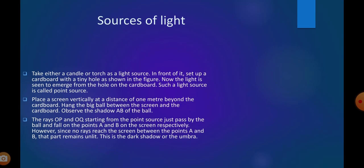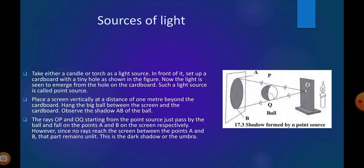Sources of light. That's the next topic. What are the sources of light? Sun is the never-ending source of light, natural. You all know that. Now other man-made sources. Take either a candle or a torch as light source. In front of it, set up a cardboard with a tiny hole as shown in the figure. Now the light is seen to emerge from the hole on the cardboard. Such a light source is called point source. You can experiment at home.